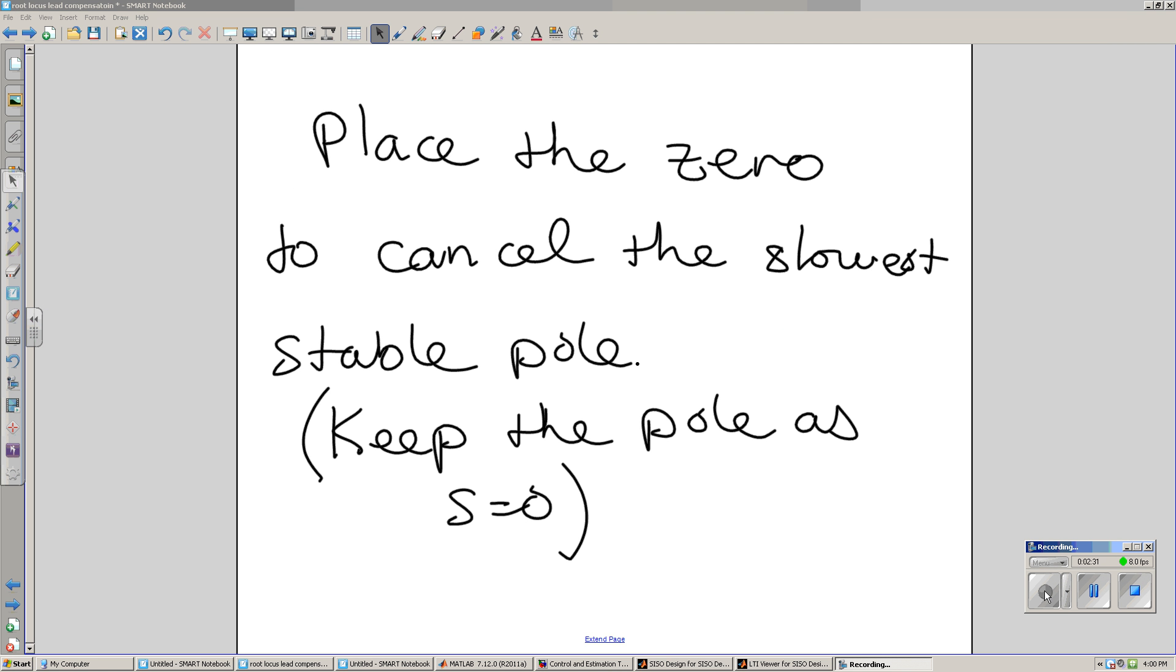So that's the rule for designing a lead compensator. First, place the zero. Place the zero to cancel your slow, stable pole. Again, remembering don't cancel the pole at the origin. First, it's not stable. And second, I like the pole at the origin. It makes it a type 1 system.